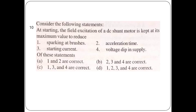At starting, the field excitation of a DC shunt motor is kept at its maximum value to reduce starting current, reduce sparking at brushes, reduce acceleration time, and reduce voltage dip to the supply. The answer corresponds to voltage dip to the supply.